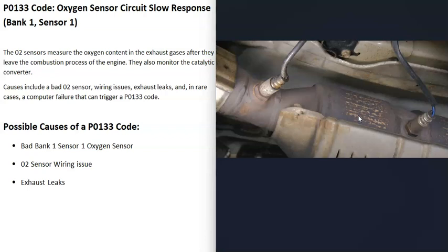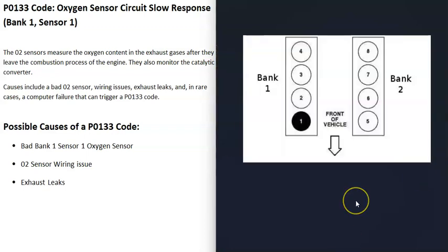When you get a P0133 code, the computer is seeing a problem with one of these sensors, mainly the bank one sensor one oxygen sensor, and it's going to be troubleshooted to know why.